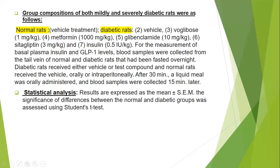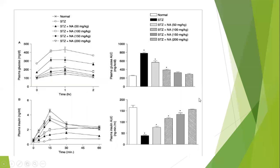Statistical analysis: results are expressed as mean ± SEM. The significance of differences between the normal and diabetic groups was assessed using the Student's t-test. We are then comparing results when administering streptozotocin alone versus streptozotocin combined with nicotinamide at varying doses.